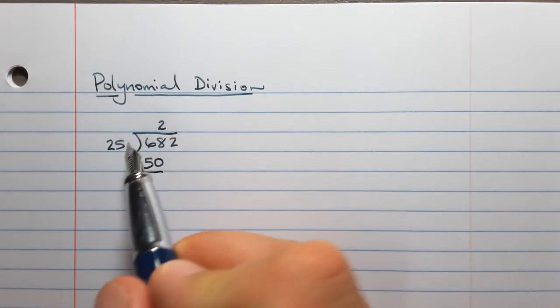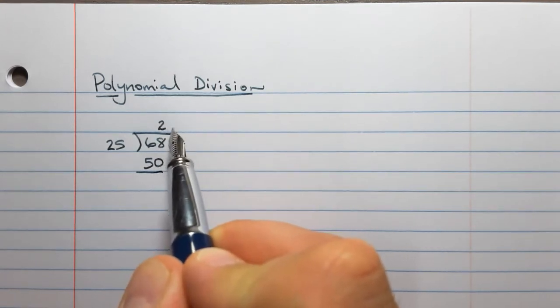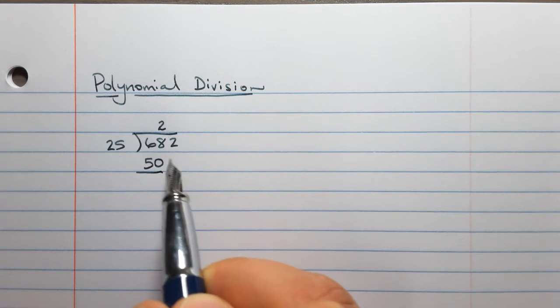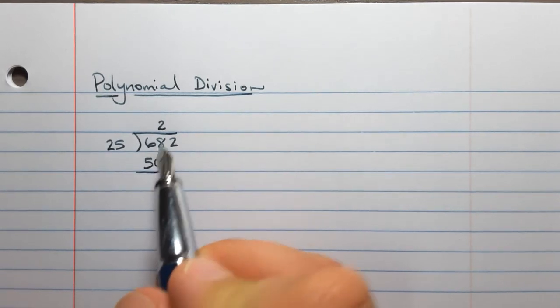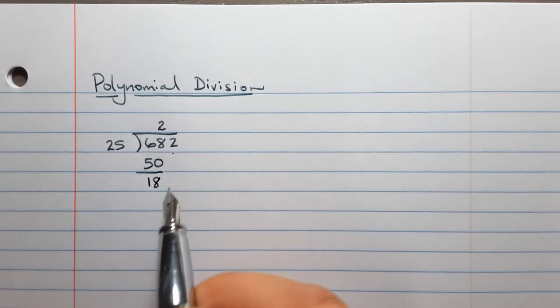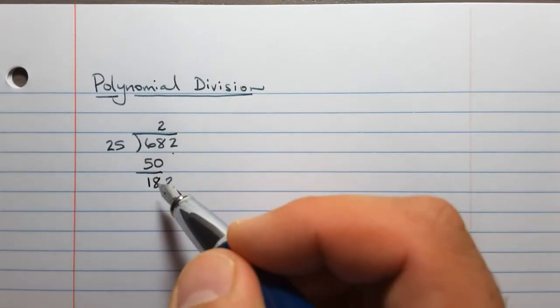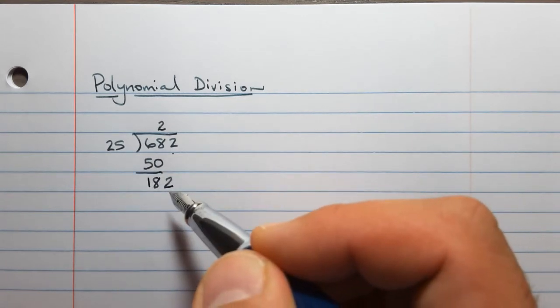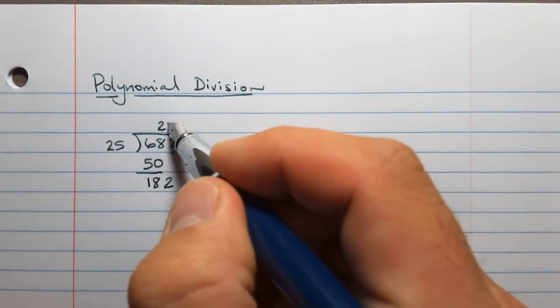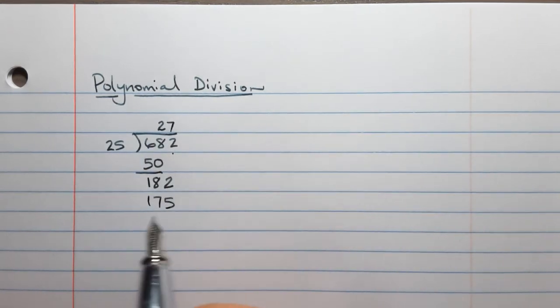We're starting with just a 6. Is 6 divisible by 25? It's not, it's too small. So we move over and collect another place value. We have 68. Is 68 divisible by 25? We can fit two 25s in there, that would be 50. So above the 8, we write the number 2. We record 2 times 25 equals 50 directly underneath so the places line up, then we subtract.